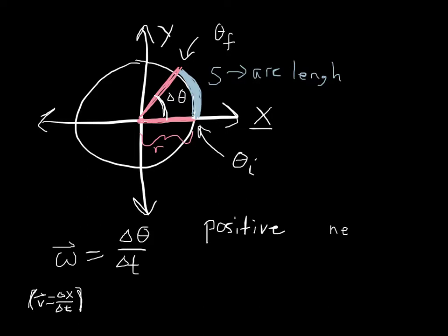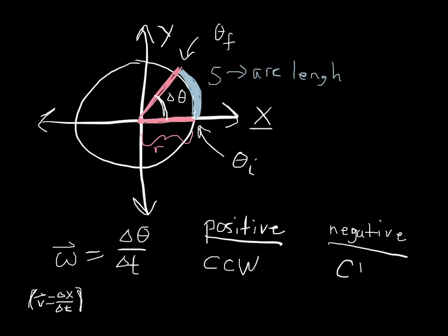A positive or negative sign tells us direction. We determine these directions by what direction you're traveling around your circle. If you are traveling counterclockwise — against the direction the clock goes — then you're positive. If you're going clockwise, then you have a negative angular velocity.